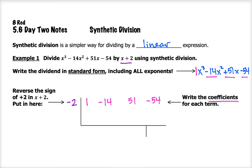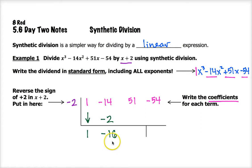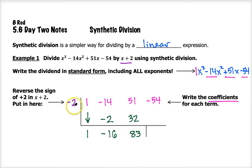Now that I have this set up, I'm going to bring down my first coefficient, 1, and multiply 1 times negative 2. 1 times negative 2 is negative 2 — that goes here. Then I combine the next two in that column: negative 14 minus 2 is negative 16. I continue the process: negative 16 times negative 2 gives me positive 32, which goes below my 51. 51 plus 32 is 83. I multiply again: 83 times negative 2 is negative 166. Combine negative 54 and negative 166, and that gives me negative 220.